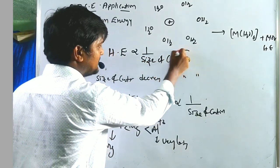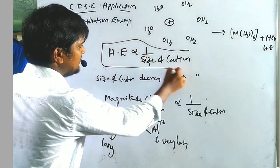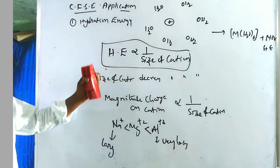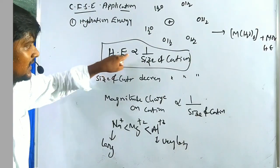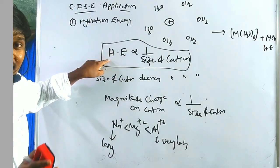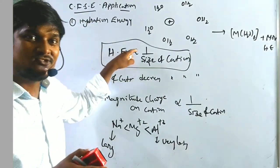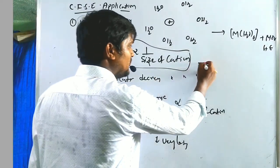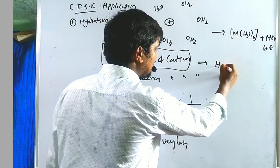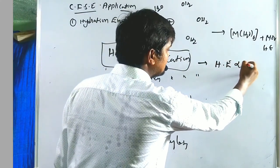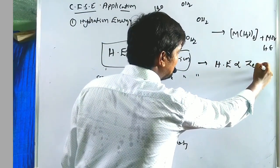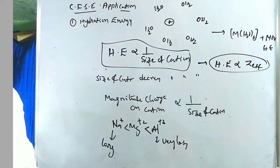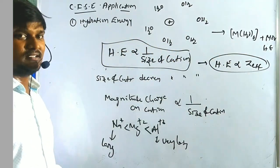Very simple logic: hydration energy is inversely proportional to the size of the cation. We also know that effective nuclear charge is inversely proportional to the size of the cation. That is why hydration energy is directly proportional to the effective nuclear charge.